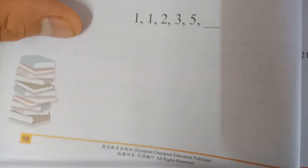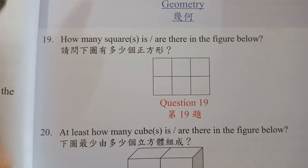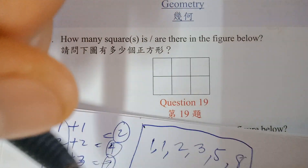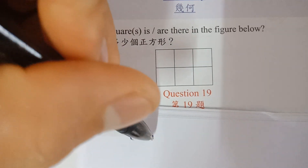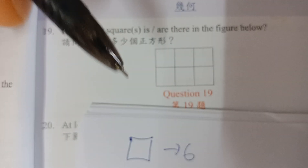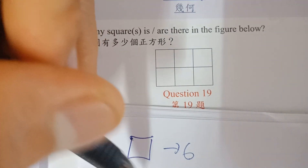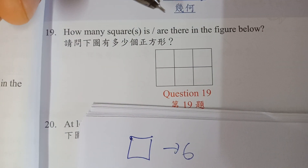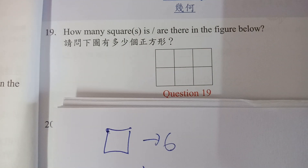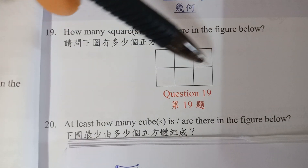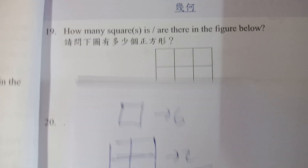Number nineteen: how many squares are there in the figure below? Count single squares — there are six. Then count squares with four smaller squares inside — there are two. So the total is eight squares: 1, 2, 3, 4, 5, 6 single squares, plus two larger ones equals 8.